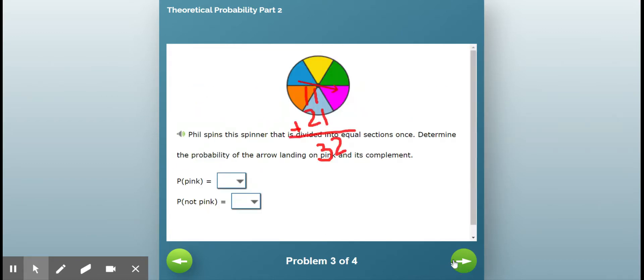Let's look at the next one. Phil spins the spinner that is divided into equal sections, and he spins it one time.